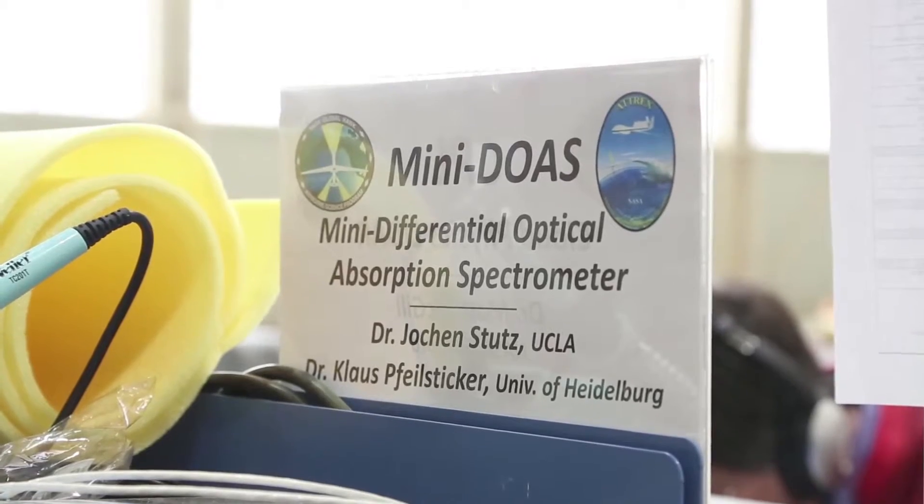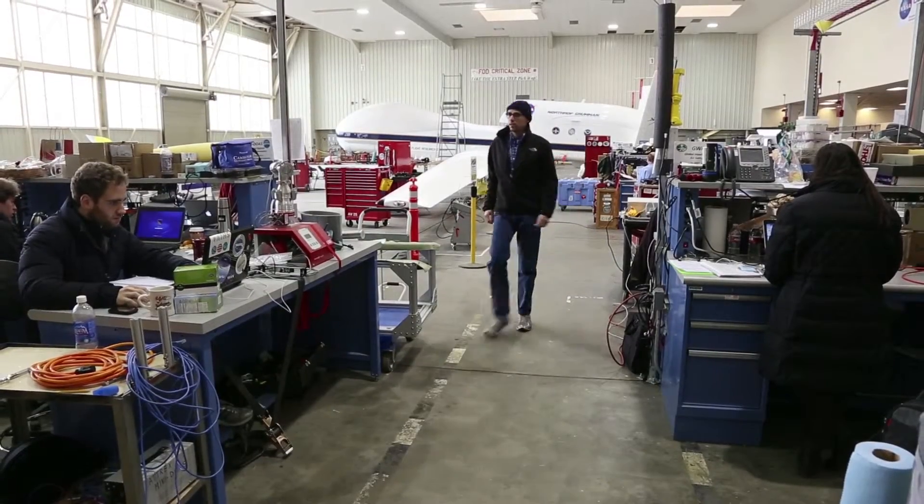Our interest is to study ozone chemistry in the upper troposphere and lower stratosphere. Ozone in this area is a greenhouse gas and we still have a few things that we don't know about the chemistry of the species. In particular, we are interested in the influence of halogen radicals. These are the same compounds that are blamed to cause the ozone hole, and they do similar things in the upper troposphere and lower stratosphere, but not to the same extent.